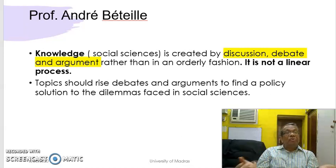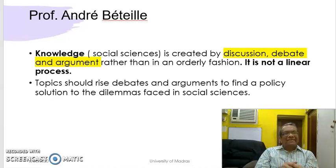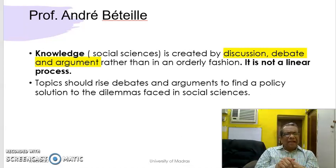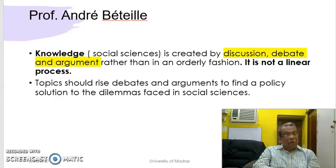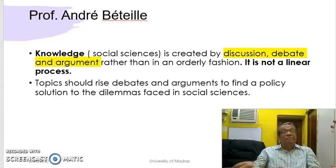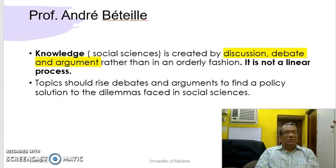Topics should rise through debates and arguments to find policy solutions to dilemmas faced in social sciences. The key point is that you should be able to understand what kind of dilemmas are happening at the intersection of sociological, anthropological, economic, biological, and climate-related areas — in order to give rise to policy recommendations so that society will be better than what it is.